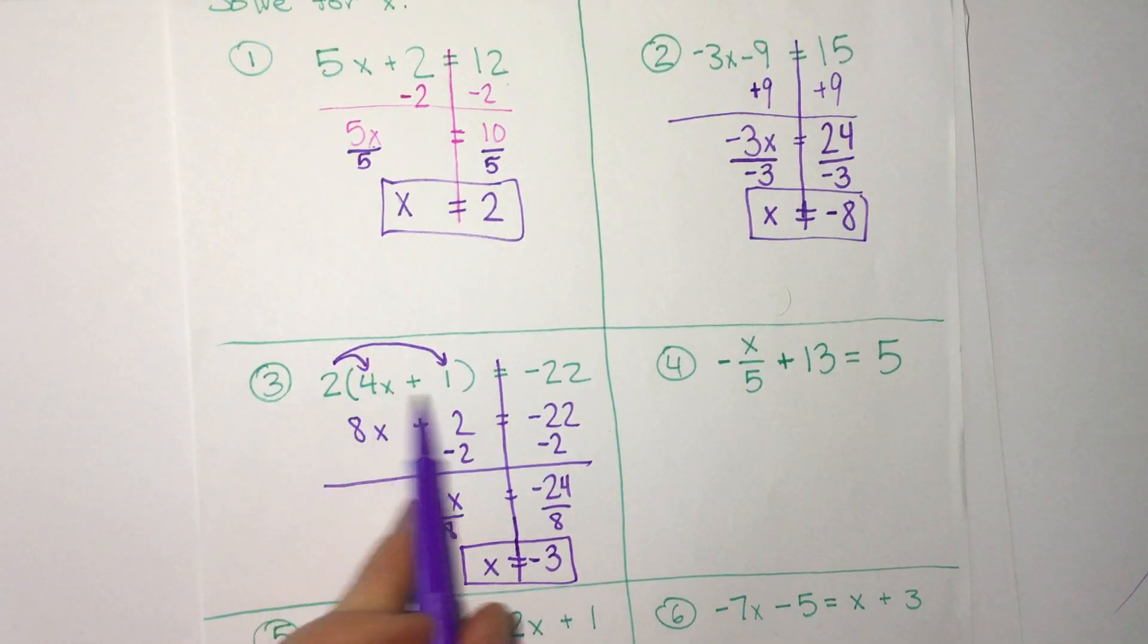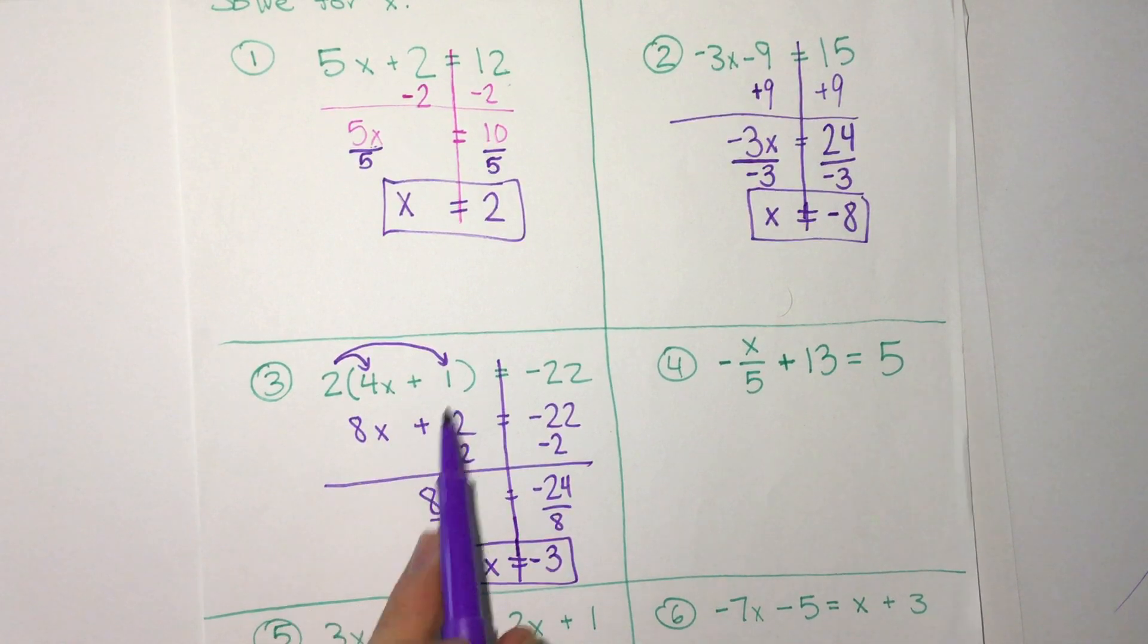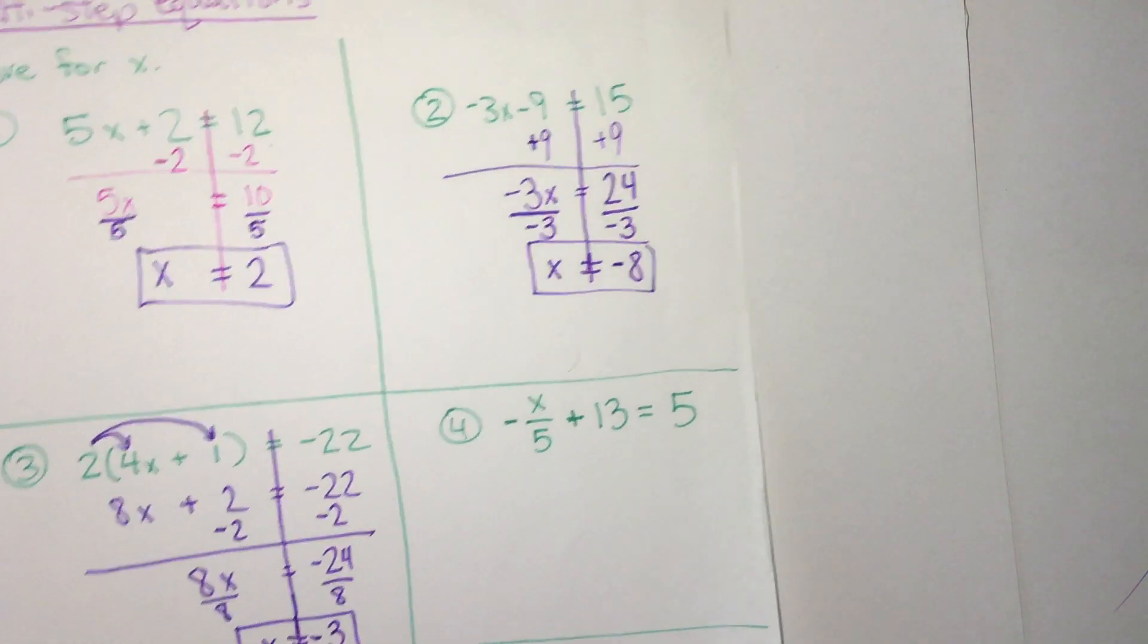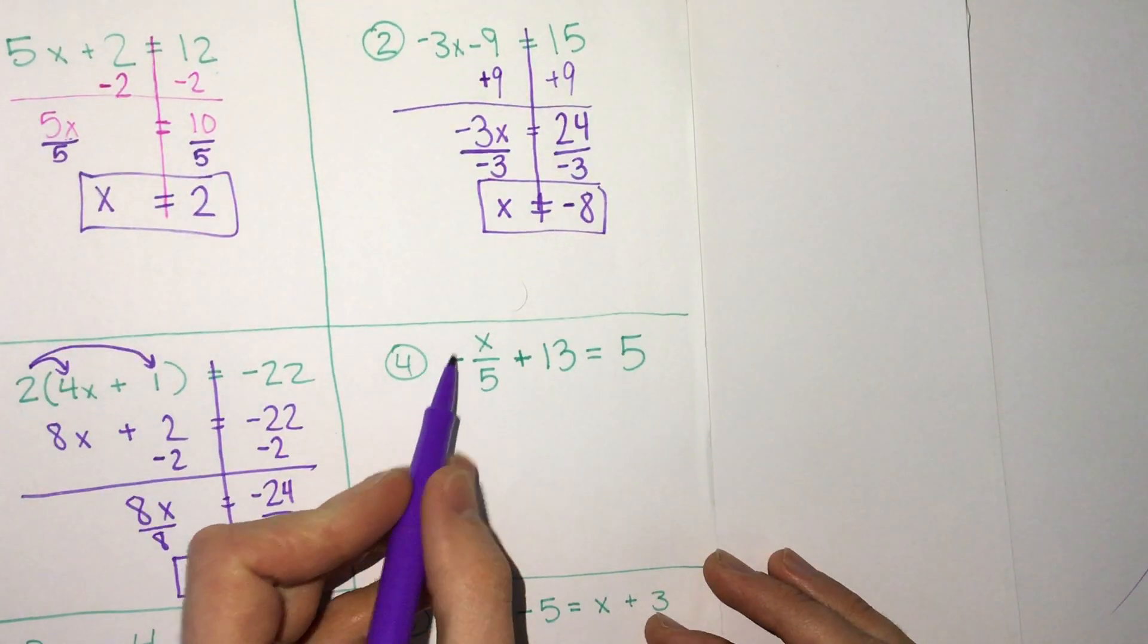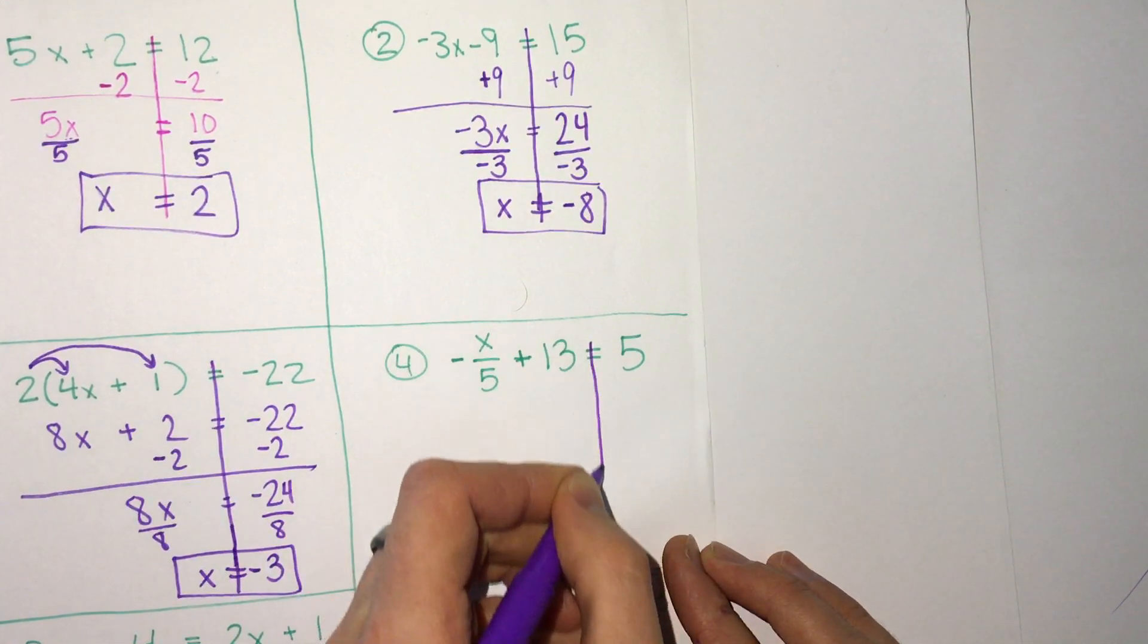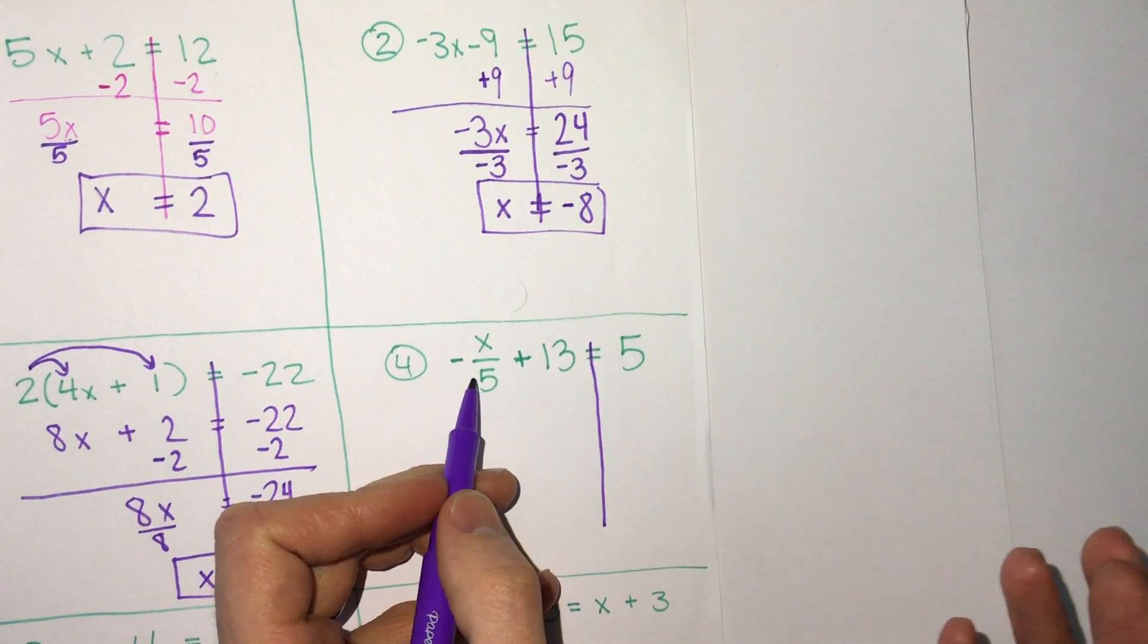So if we see parentheses like this, or things that we can combine like terms, we can do that first before we start moving things back and forth in our equation. And now let's look at one where we have a fraction. So we saw these in the one-step equations, but now we're going to look in a multi-step. But we don't actually look here first because remember, addition and subtraction first.